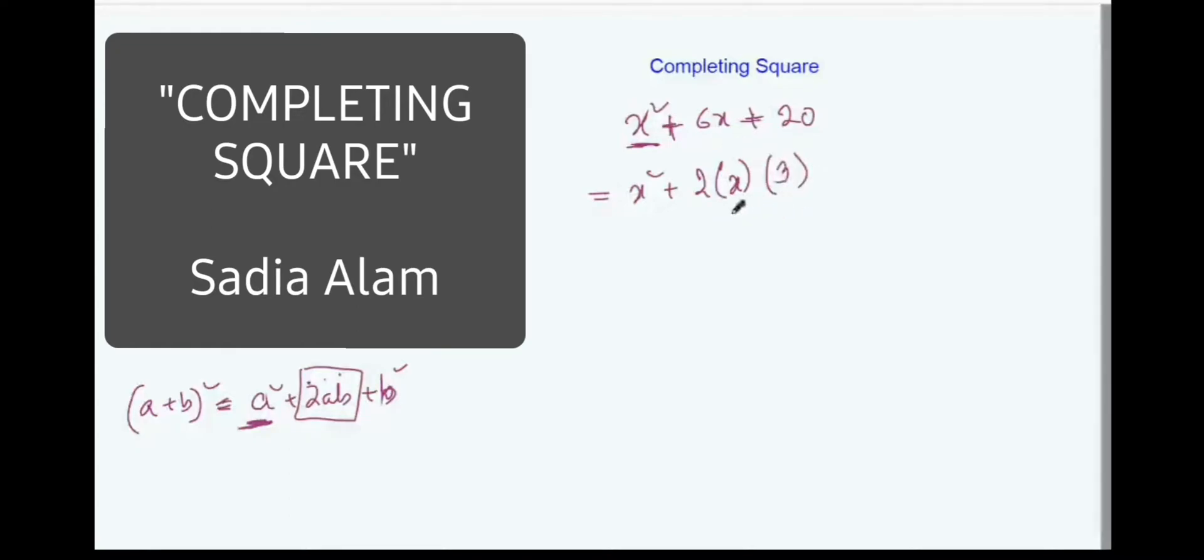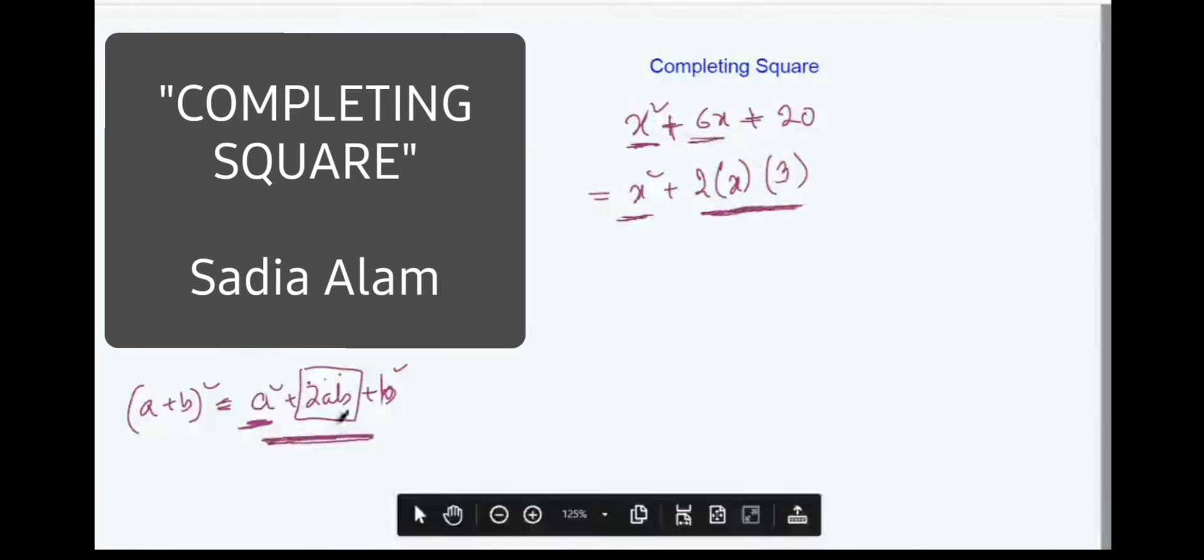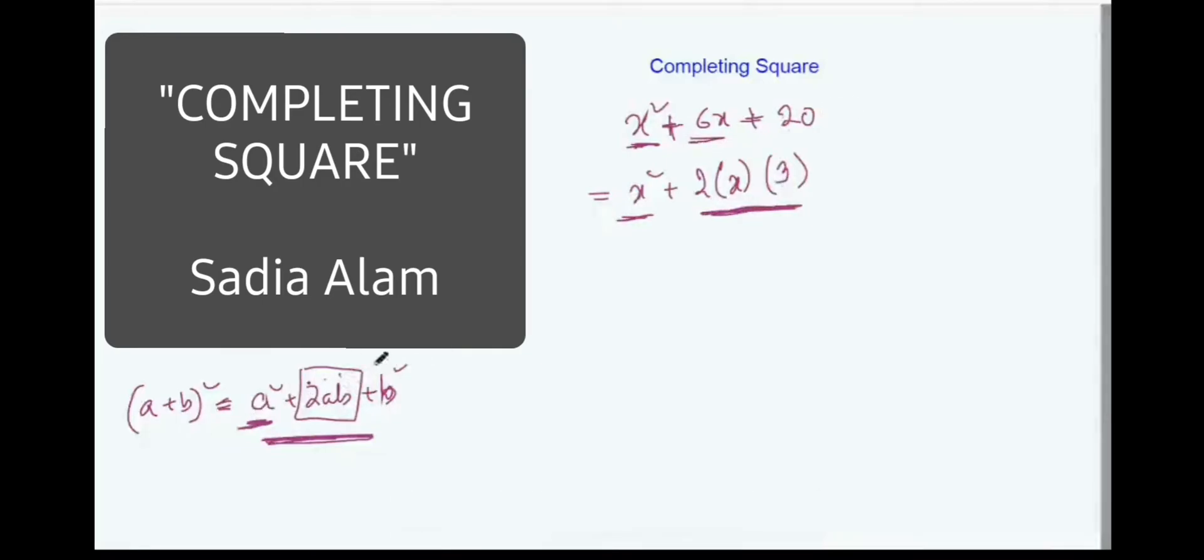So it's like x square is here, 6x is also here but in a different format so that we can actually rearrange this thing into this formula format. So a square done, 2ab done, next you need b square.